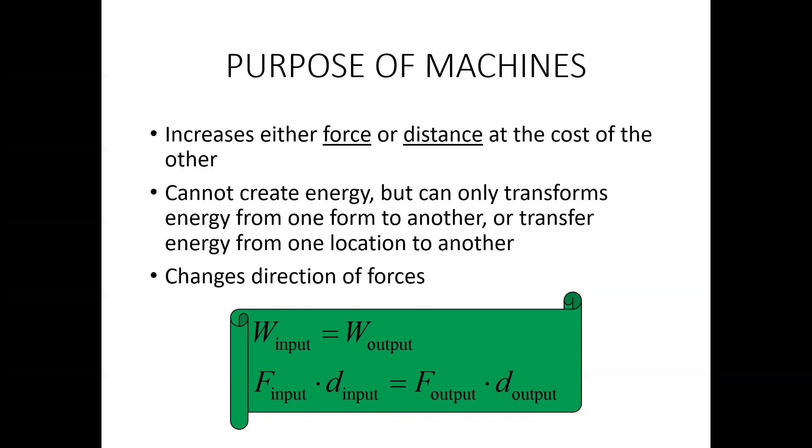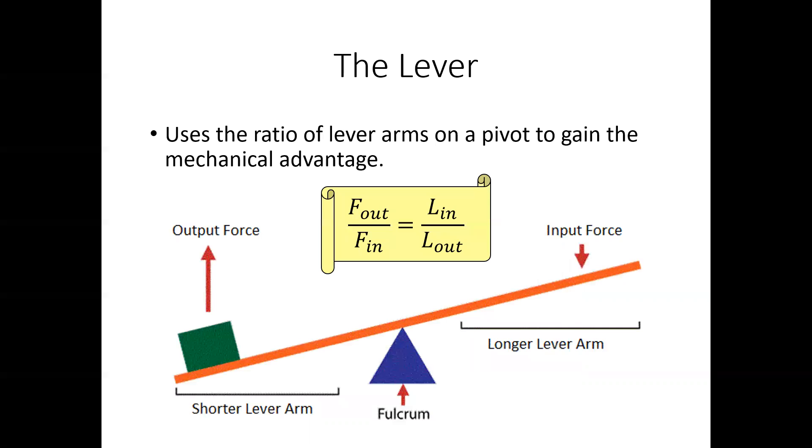Here's the equation for the lever: F_out divided by F_in is equal to L_in divided by L_out. But let's talk about what that means. Let's say I have a fulcrum and I have a very sturdy and light plank, maybe made out of some titanium or some carbon.